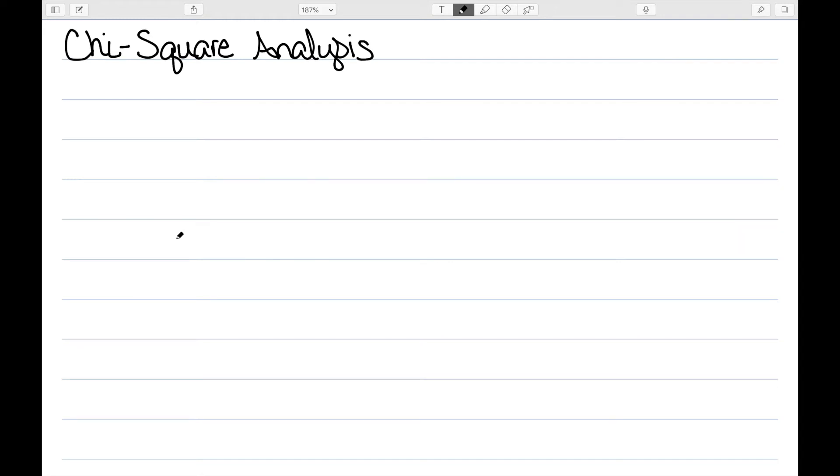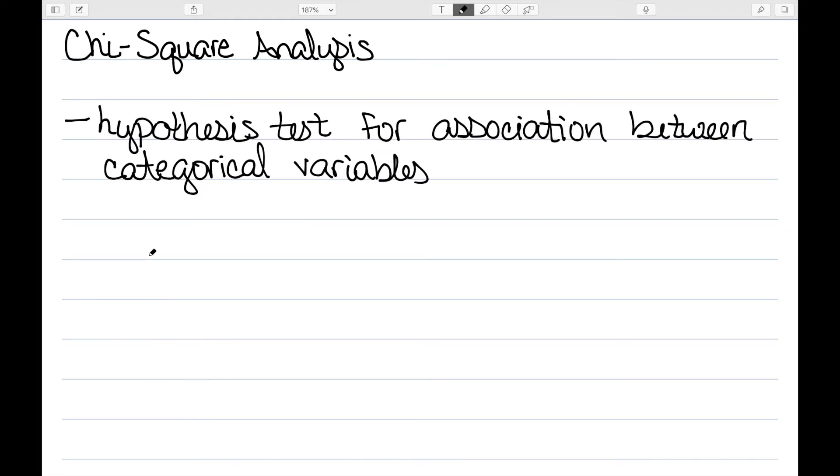In this video, I want to look at chi-square analysis. A chi-square analysis is a type of hypothesis test that looks for associations between categorical variables.